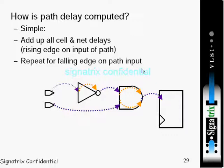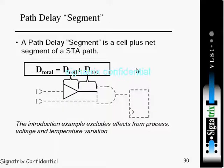Next, the definition for path delay segment. We know that in a circuit we will have so many elements and so many paths, but what is a path delay segment? If you consider the same diagram what we have seen in previous slide, segment means one cell plus one net.